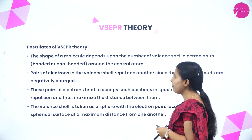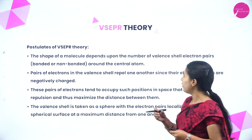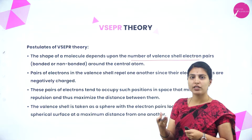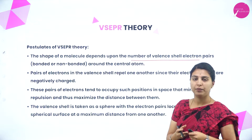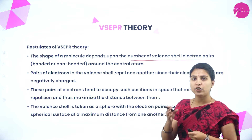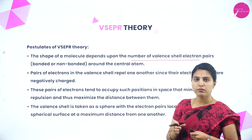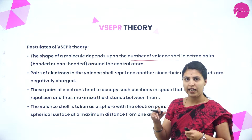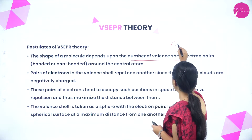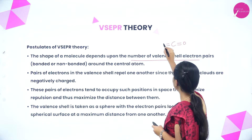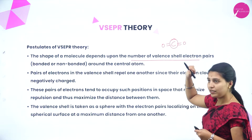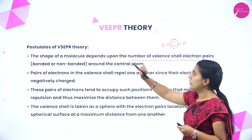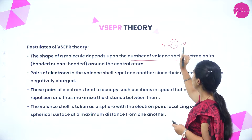The postulates of VSEPR theory state that the shape of a molecule depends on the number of valence shell electron pairs around the central atom. Valence electrons are the electrons present in the outermost shell of an atom. For example, in CO₂, carbon is the central atom and its bond pairs or lone pairs must be considered to determine the shape.